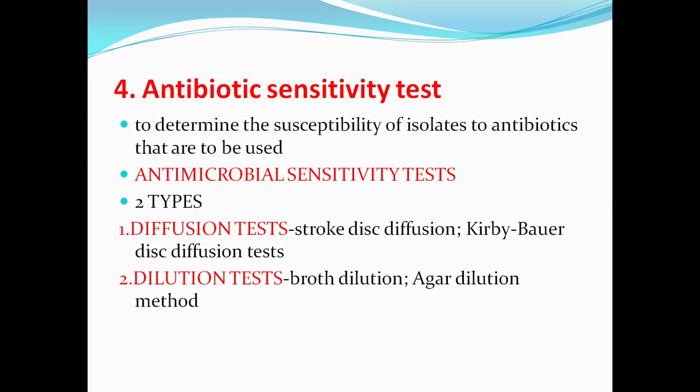Next question: antibiotic sensitivity test. The purpose of this test is to determine the susceptibility of isolates to antibiotics which are to be used — checking which antibiotic the bacteria is sensitive to and which it is resistant to. Antimicrobial sensitivity tests are of two types: diffusion test and dilution test. The diffusion test has two types: stroke disc diffusion method and Kirby-Bauer disc diffusion method. Dilution methods also have two types: broth dilution and agar dilution methods.